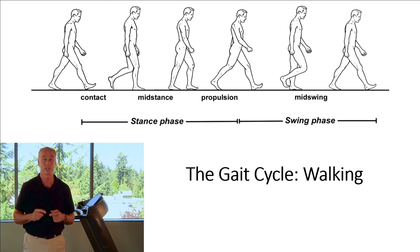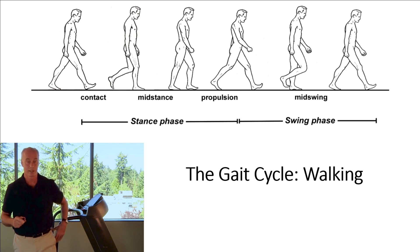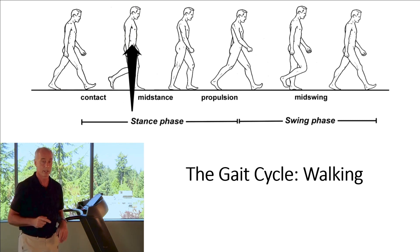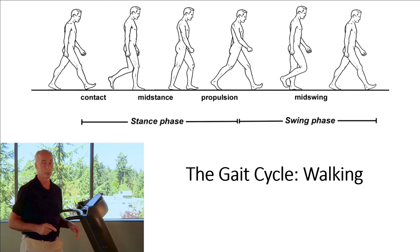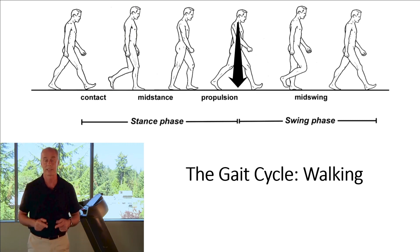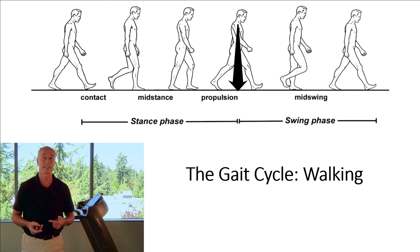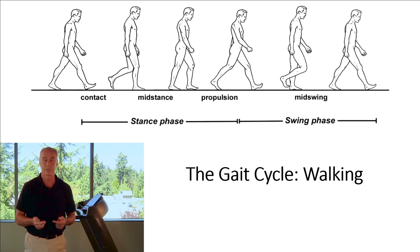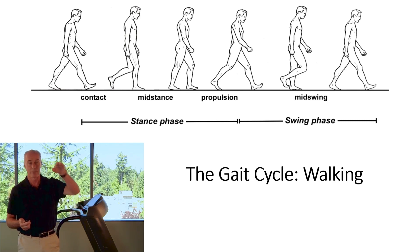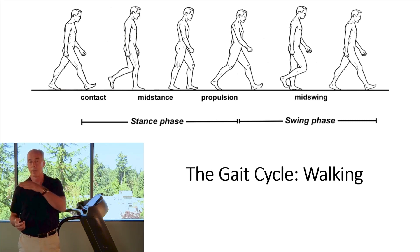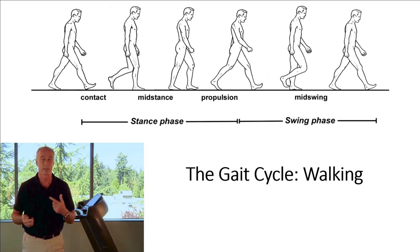If you look at this picture, during mid-stance the center of mass is at a high point, but during double limb support — where propulsion is — the center of mass is at a low point. So you create a graph where the center of mass is high in mid-stance and low during double limb support.